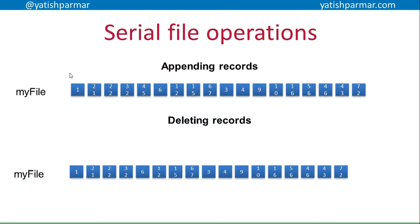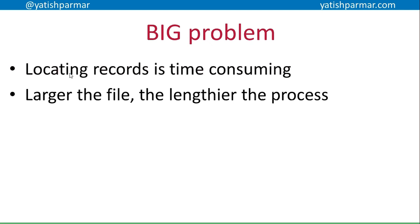Based on this, you can see the problems with serial files. First, if I want to search for a record, because there is no particular order apart from chronological, I basically have to start at the beginning of the file and work my way to the end. The other problem is deletion — if I want to delete a record, I basically need twice as much memory as the actual data file, because I need to create a copy of the file and simultaneously keep two copies of the data in RAM during that deletion process.